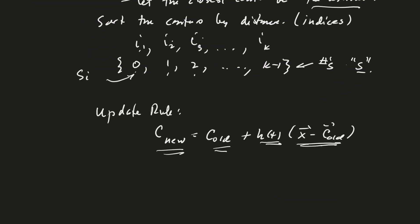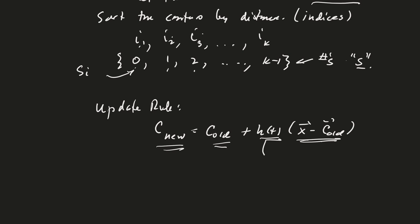And so this H of T is modified by how close C is to X. So if C is very close to X, then H of T will be large, and if C is far away from X, it's going to be small.